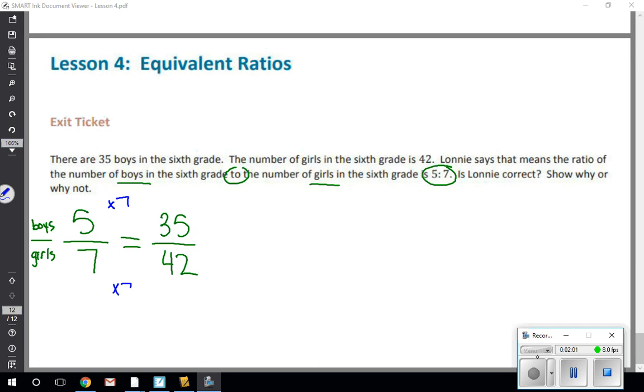For that to be equal, I'd also have to pull out 7 sets of 7 to make 42. But in this case, 7 sets of 7 does not equal 42—it equals 49. So when we ask 'Is Lonnie correct?', the answer is no. He is not correct because the ratio 5 to 7 is equal to 35 to 49, not 35 to 42.